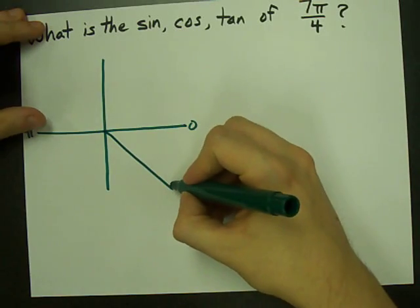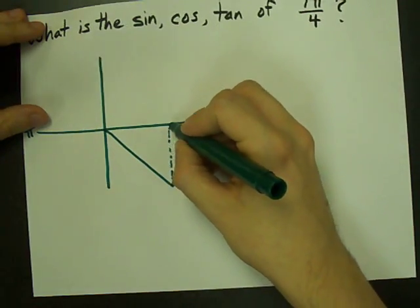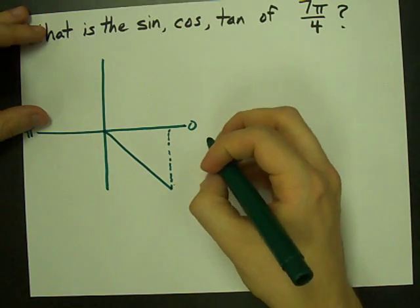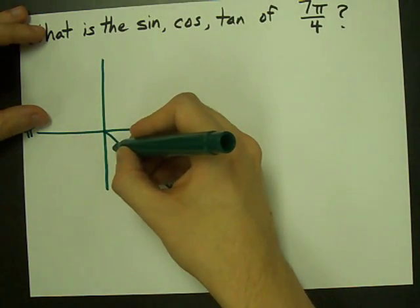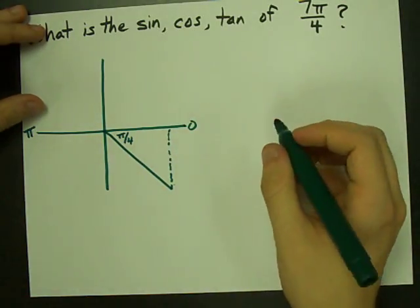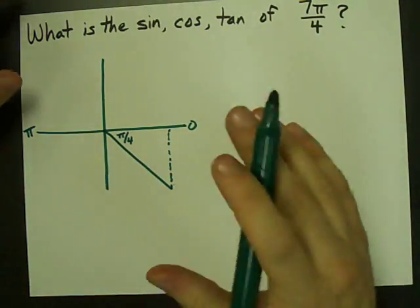Draw your angle, drop a vertical line in there so that you've made a special triangle. And if I have 7π over 4 here, that means I have 1π over 4 left. That's a special triangle.